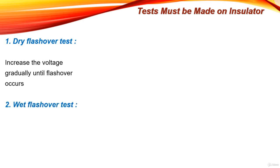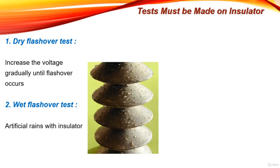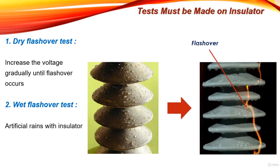The second test is the wet flash-over test. It is the same as the previous test but using artificial rain to test the performance of the insulator under rainy conditions, as occurs in many countries. This test aims to determine the flash-over voltage of the insulator when it is wet, and of course it will be lower than the flash-over voltage under dry conditions.